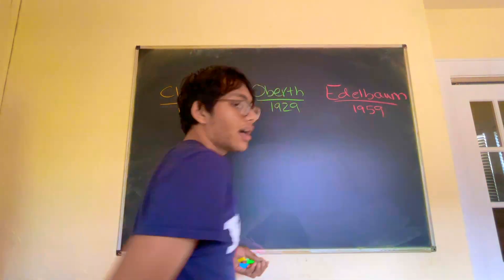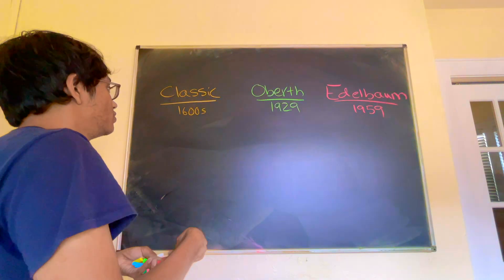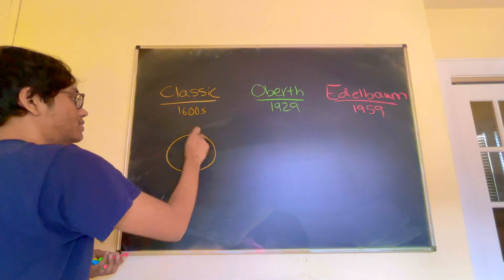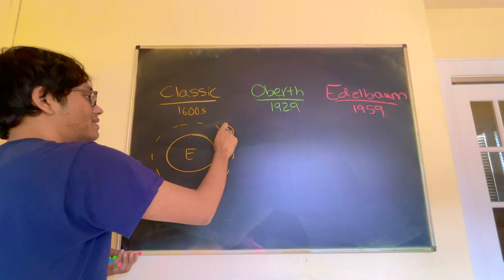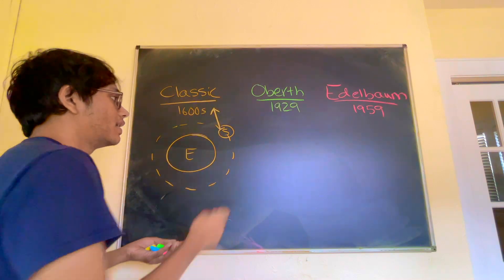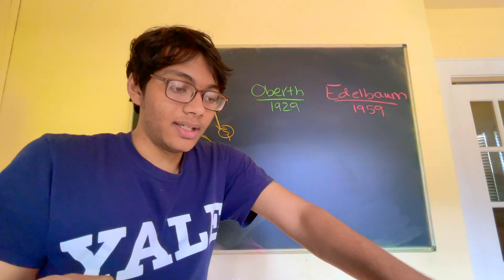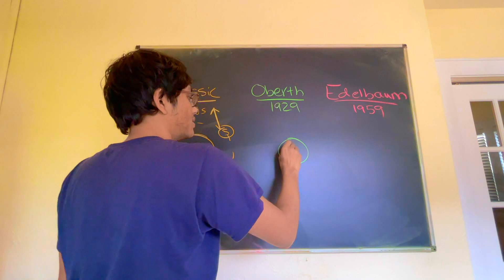The Oberth came around 1929 and Edelbaum came 1959. The classical method said this: You have the Earth, your circular orbit, you boost tangentially, and you're gone. That creates your hyperbolic thing.